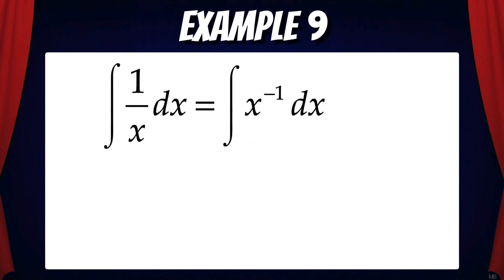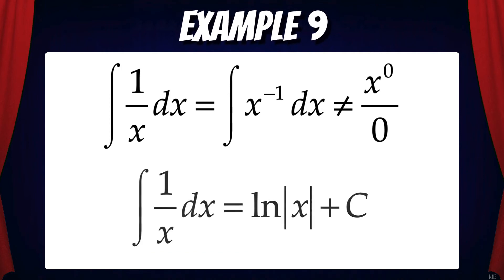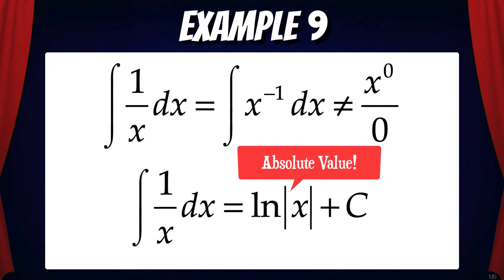Here's one to ponder: what's the integral of 1/x dx, which is the same as x^(−1) dx? If we reverse the power rule, we get x⁰/0 — and that doesn't make sense because we'd be dividing by 0. So instead, we ask ourselves: is there a function whose derivative is 1/x? The answer is yes — that function is ln|x| + c. We have to put absolute value bars around the x because the 1/x function exists for both positive and negative values of x, but ln(x) doesn't exist for negative values. The absolute value bars ensure the function can take in both negative and positive values of x.